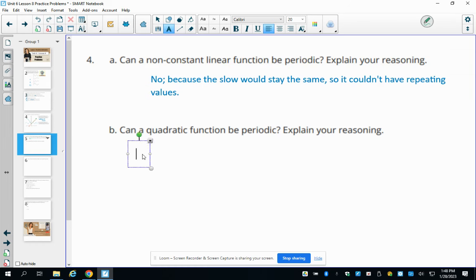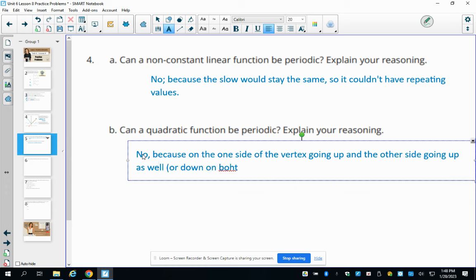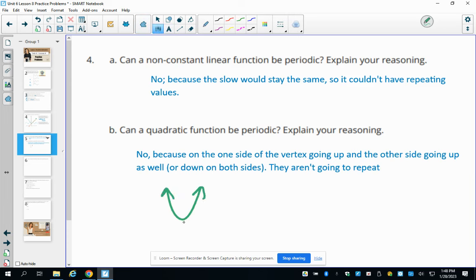Can a quadratic function be periodic? And no, because on the one side of the vertex, it's going to be going up, down, I guess, if it's negative. And the other side going up as well or down on both sides. So they aren't going to repeat. They're not going to come back up and go back down. So it's just looking like this. So a quadratic just looks like this. So it's just going to keep going up on either side or it's going to keep going down on either side. So it's not going to be repeating.